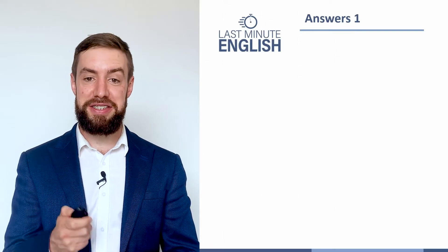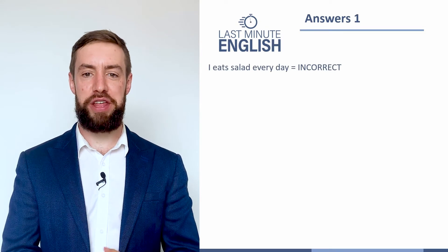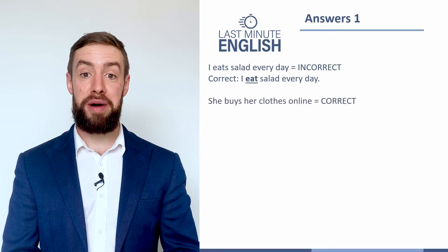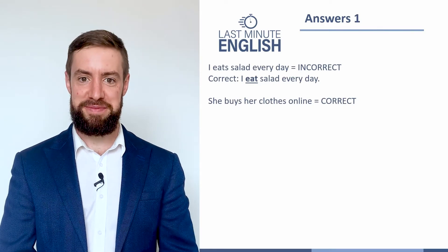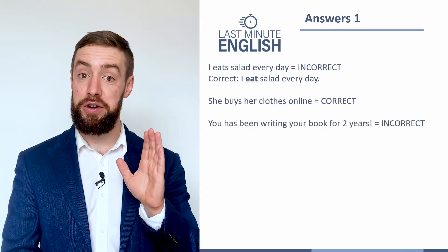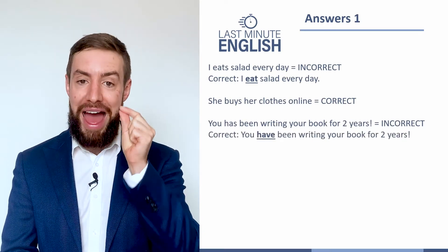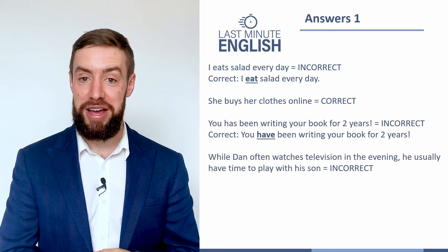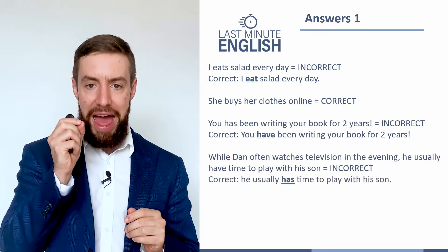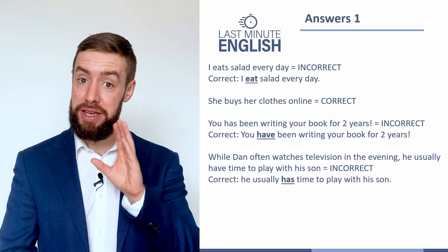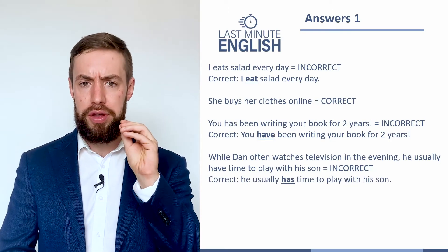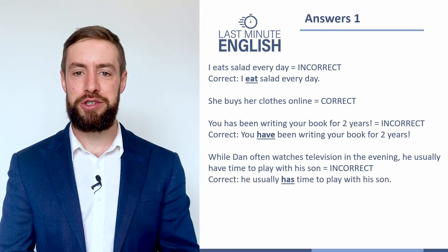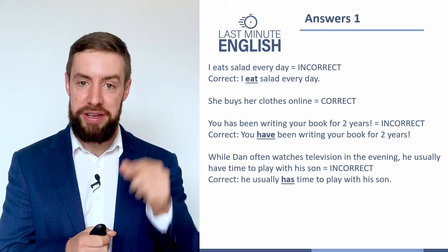Let's take a look at the answers. The first one — 'I eats salad every day' — is of course wrong; it should be 'I eat salad every day.' The second one — 'she buys her clothes online' — is correct. The third one — 'you has been writing your book for two years' — is incorrect; it should be 'you have,' because 'you' is not the third person. And the last one is also incorrect; it should be 'he usually has time to play with his son.' Those longer sentences are often more difficult — you have to go back and check who you're talking about and whether the subject and verb agree.